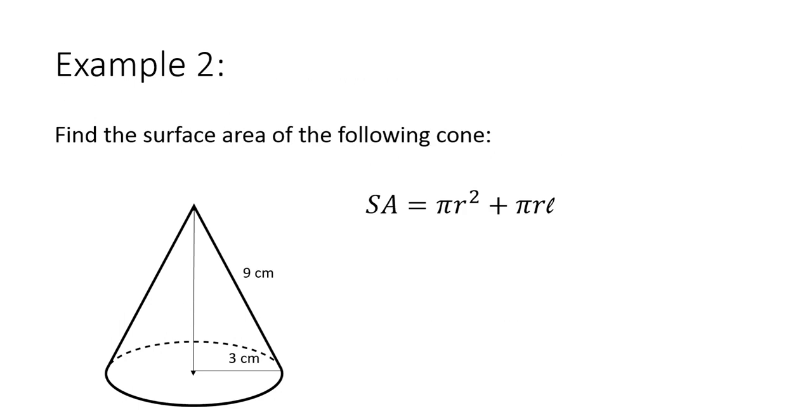So in an example, let's find the surface area of the following cone. I have my formula. Surface area equals π r² plus π r L, where L is your slant height.